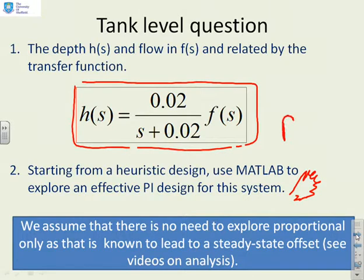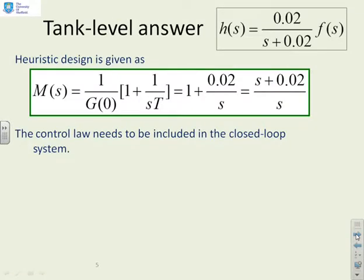I'm going to move to the solution now. So now is a good time to pause while you try this by yourself. First, we'll remind ourselves what the heuristic design is. You'll see here's the formula that you were given. If I plug in the numbers for this particular system, you'll see that the PI compensator comes out like this, S plus 0.02 over S.